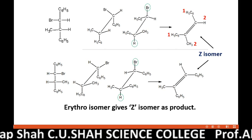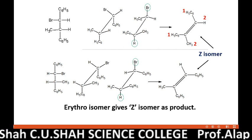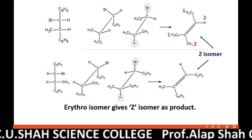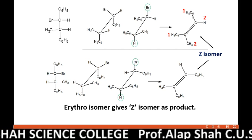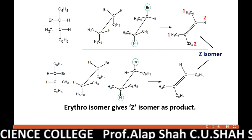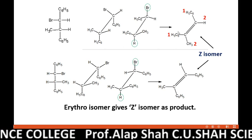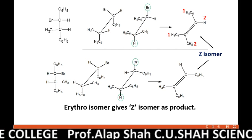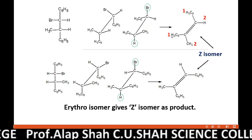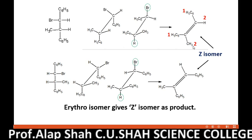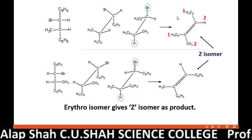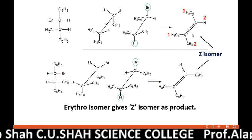Higher atomic number means higher priority. The phenyl group has carbon with atomic number 6, and hydrogen has atomic number 1. When both groups on each carbon are carbon-based, we compare the next atoms — phenyl has higher priority than methyl. So phenyl = priority 1, methyl = priority 2. The equally prior groups 1 are on the same side of the double bond, so this isomer is called Z (Zusammen) — the German meaning of Zusammen is 'together.'